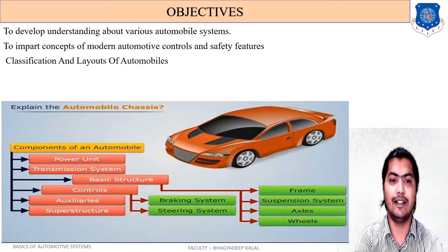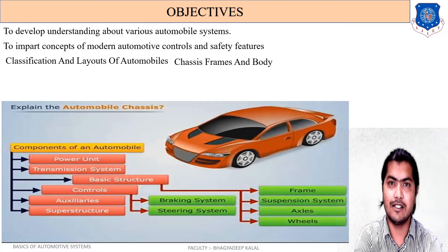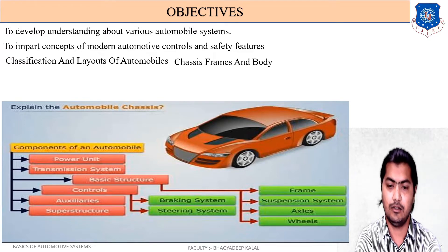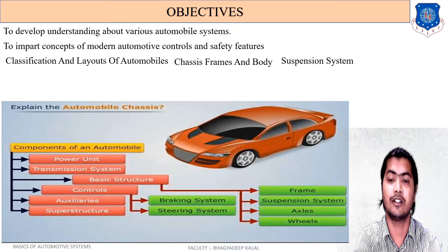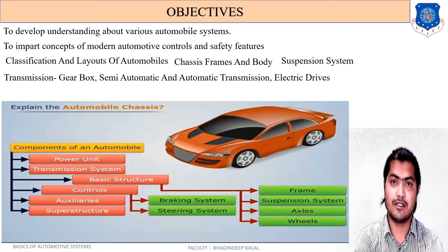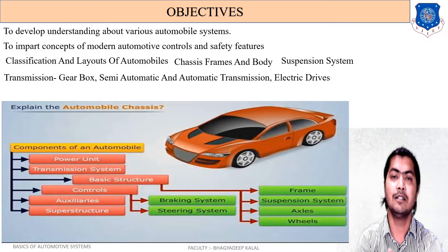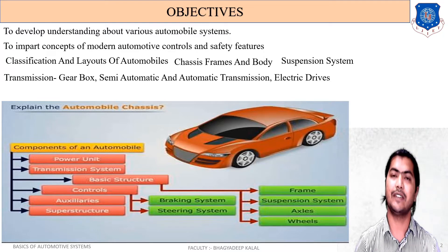Next we will learn the classification and layout of automobiles. Then chassis frame and body — what is meant by chassis frame, and the difference between chassis, frame, and body. We will also study various types of suspension systems and their functions. A major topic is the transmission system: how power is transmitted from the engine to the wheel using a gearbox, semi-automatic, or automatic transmission.